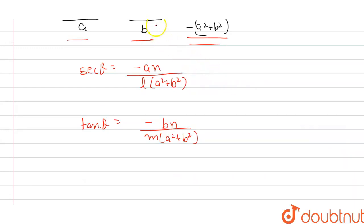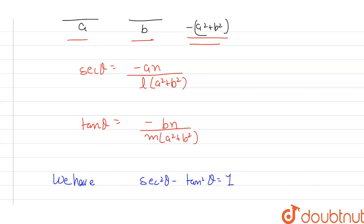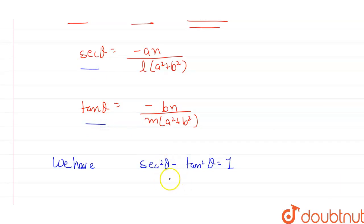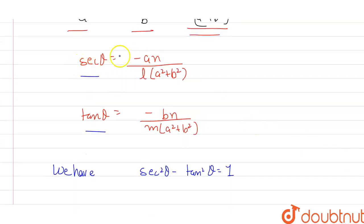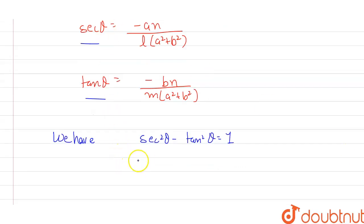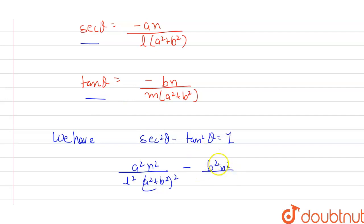Now we know the trigonometric identity: sec squared theta minus tan squared theta equals to 1. So I'm going to square both values of sec theta and tan theta and substitute into this identity. Squaring sec theta gives A squared N squared divided by L squared times A squared plus B squared whole squared. Squaring tan theta gives B squared N squared divided by M squared times A squared plus B squared whole squared. So the identity becomes: A squared N squared over L squared times A squared plus B squared whole squared, minus B squared N squared over M squared times A squared plus B squared whole squared, equals to 1.